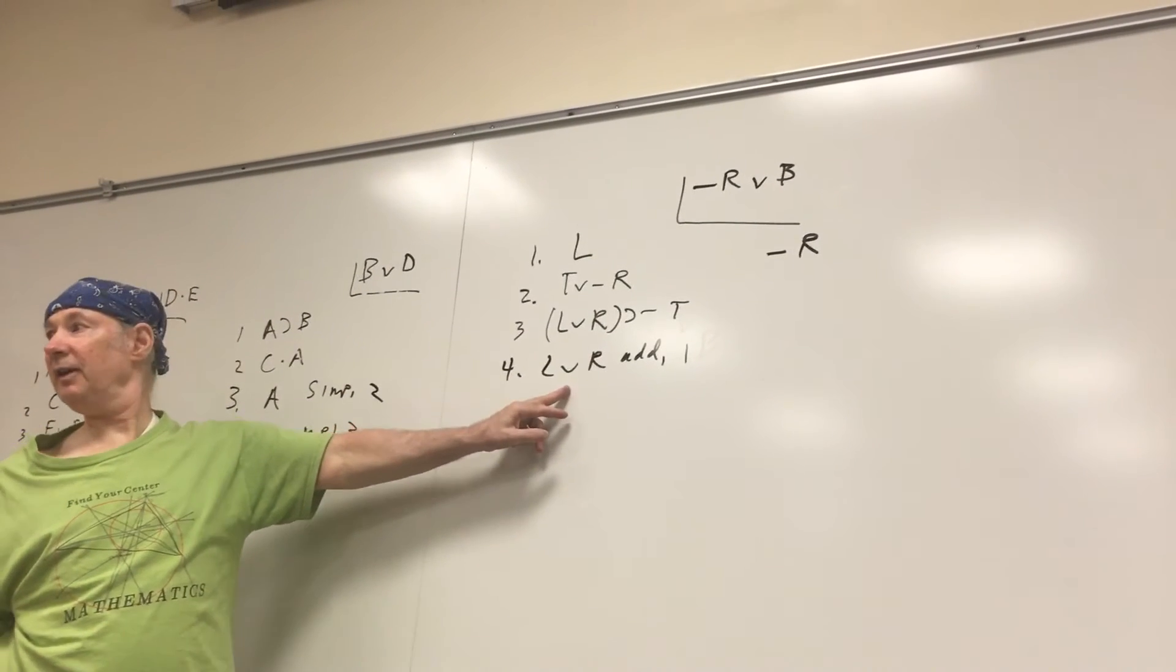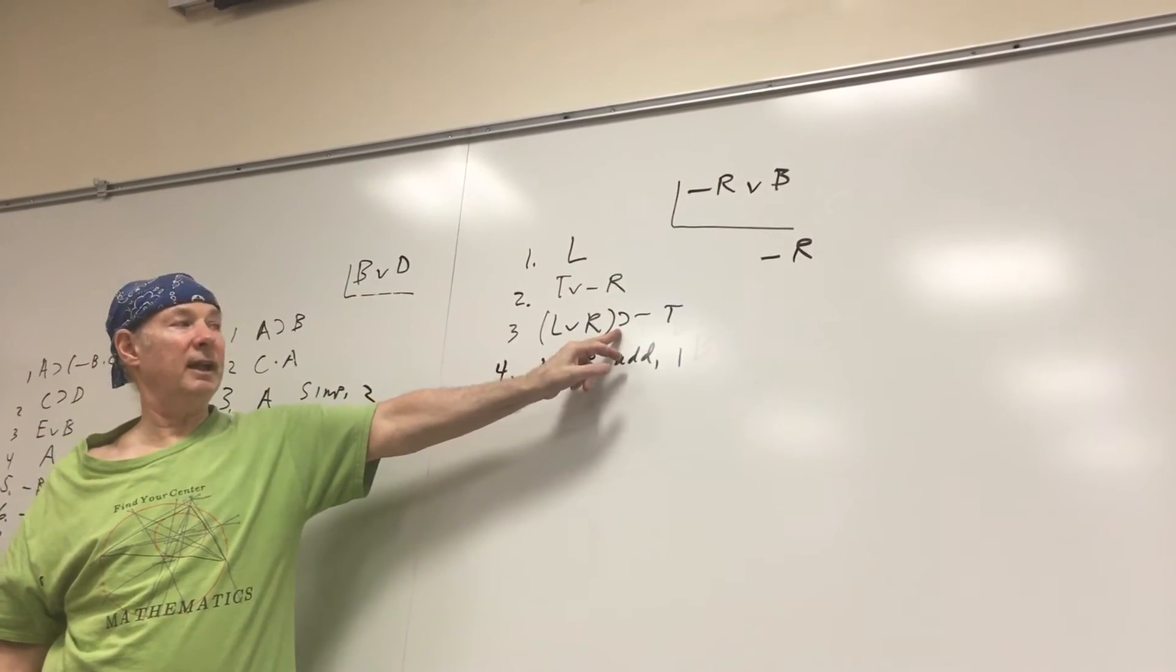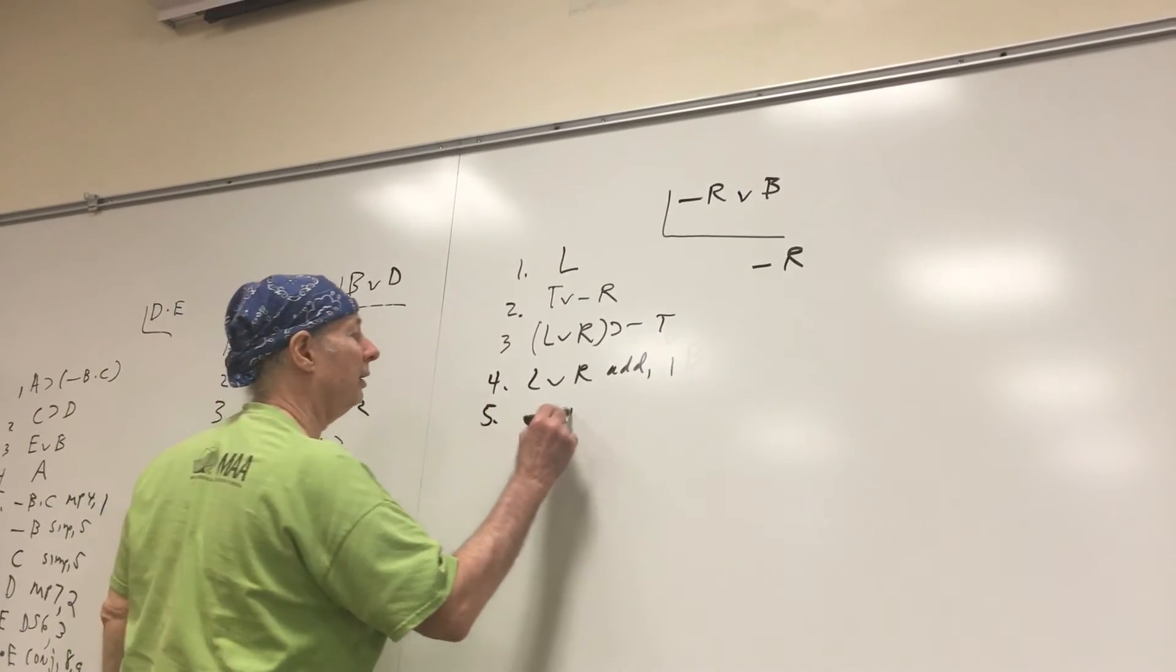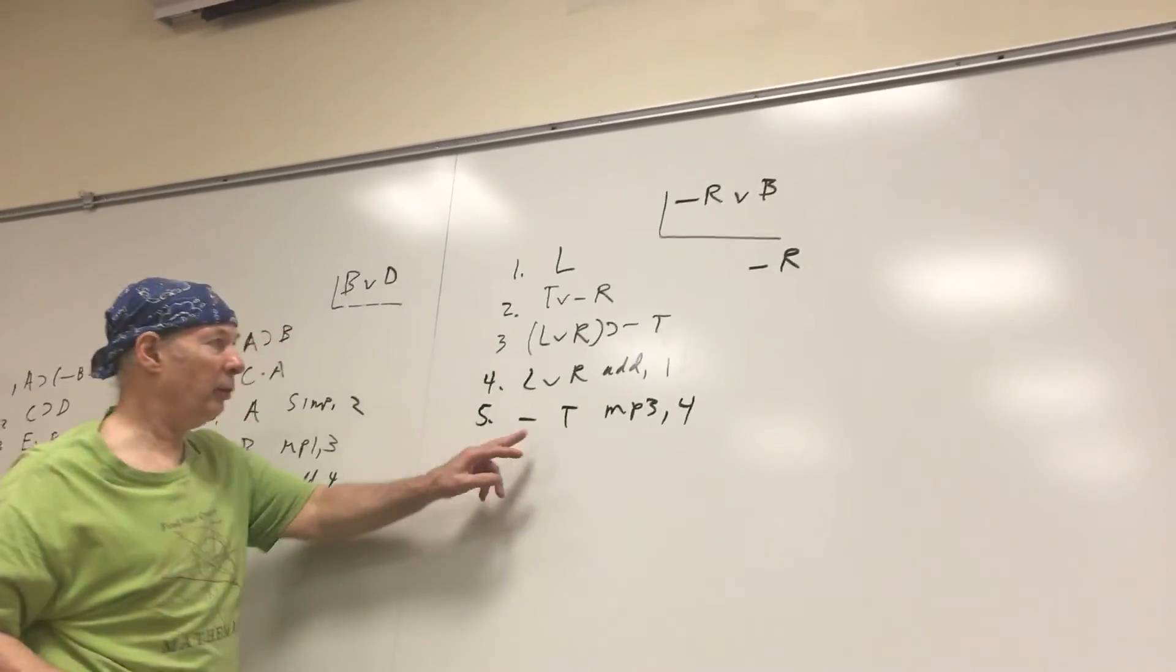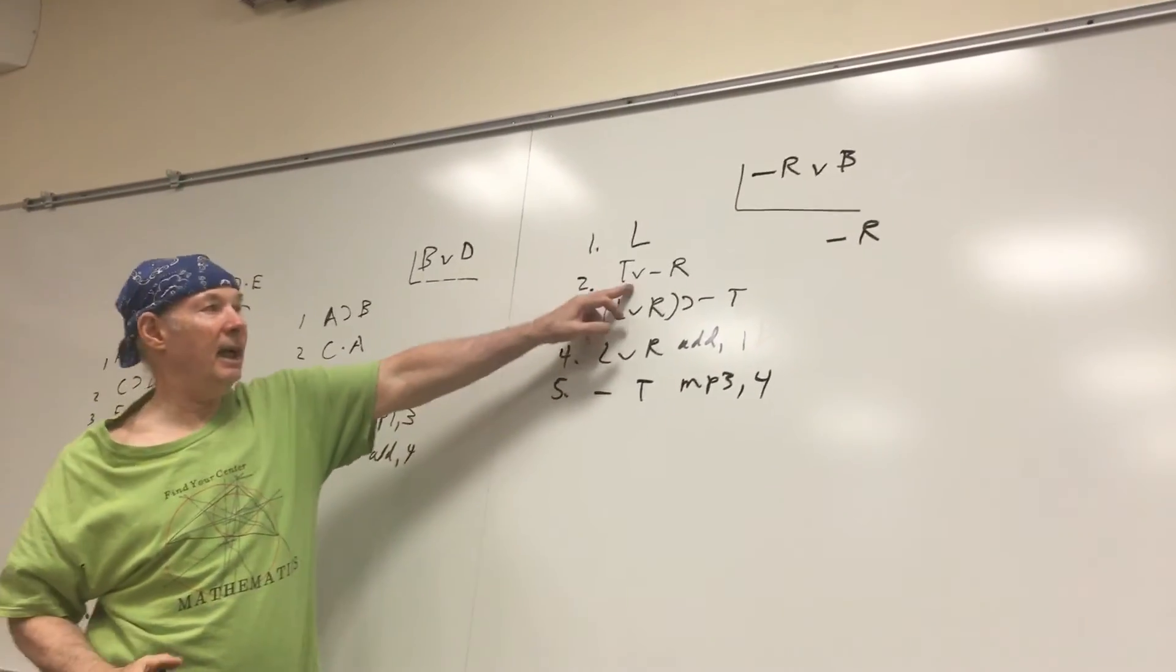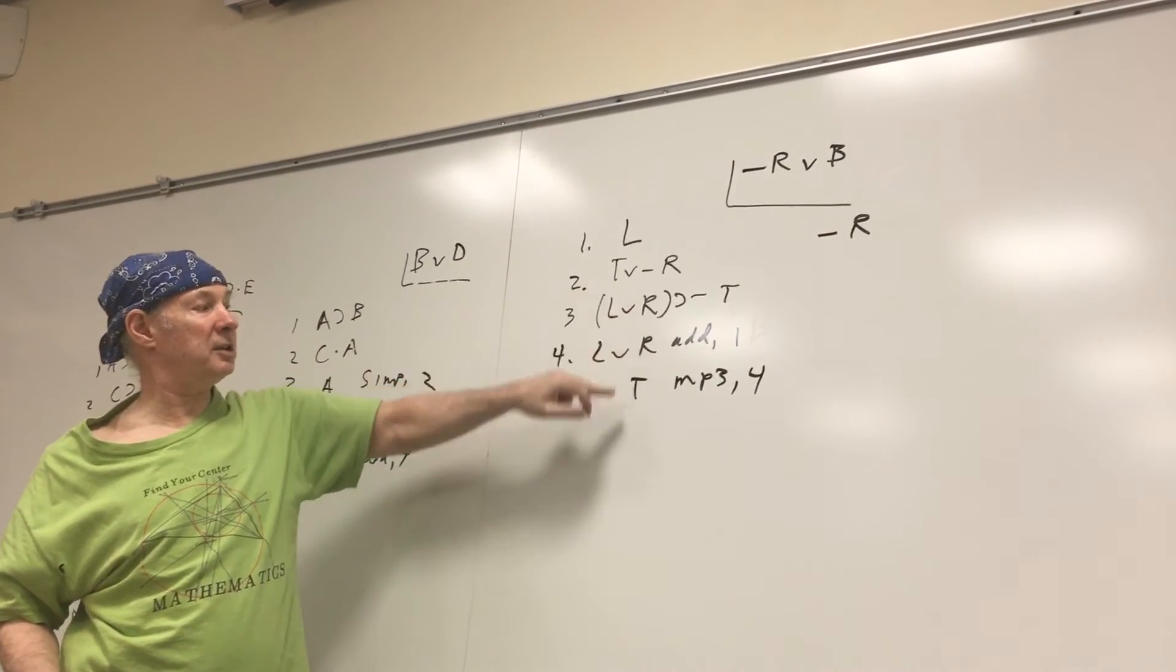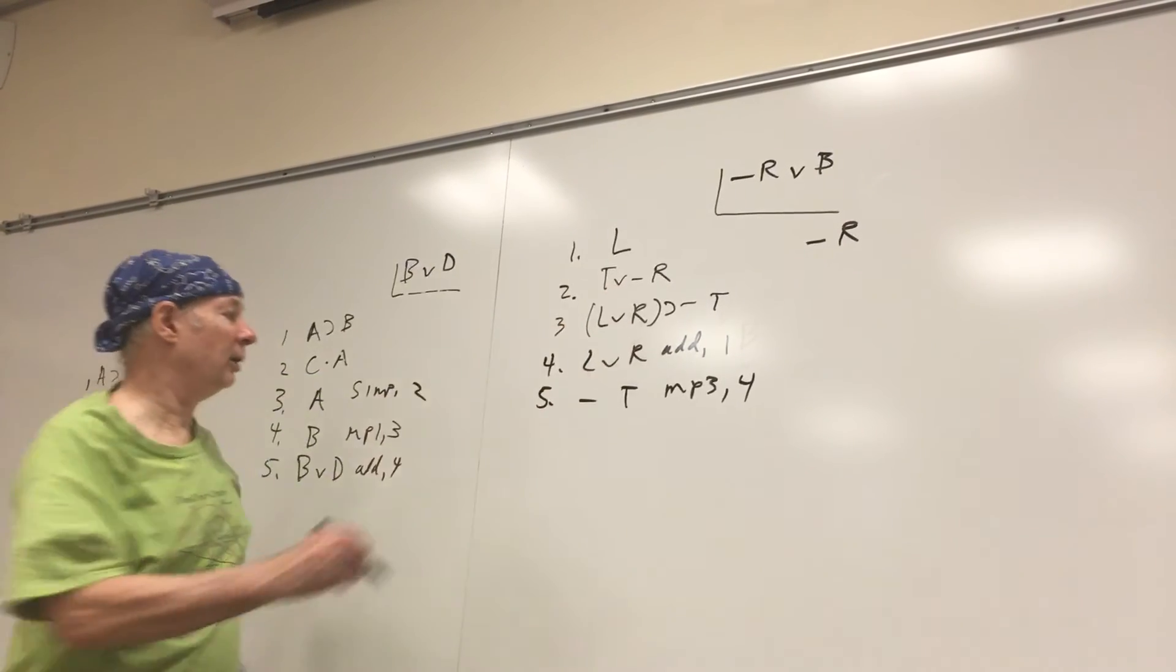And now we have the left-hand side of this horseshoe so we can get squiggle T by MP. And now we have squiggle T and this wedge. We can do DS and infer squiggle R.